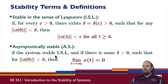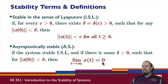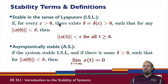Asymptotic stability is clearly a stronger form of stability than ISL. In terms of nested sets of functions, the set of asymptotically stable systems lies within the set of systems stable in the sense of Lyapunov.